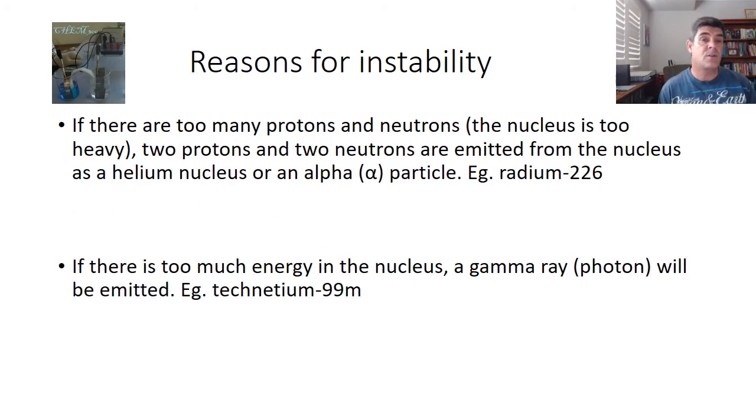There are two other reasons why nuclei might be unstable. One is that they are just too big, and anything that's pretty much above lead in the periodic table is already too big, and will decay through alpha decay. But of course this is only one example.